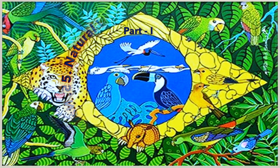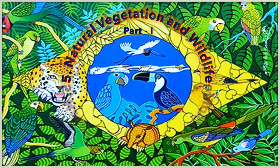Welcome back students to the fifth chapter of 10th standard geography: Natural Vegetation and Wildlife. In this lesson we'll cover the natural vegetation and wildlife of both India and Brazil and also compare them. So far we've studied the location, extent, physiography, and climatic conditions of both these countries. Now in this chapter we will see how these factors affect the natural vegetation and wildlife. This presentation will cover the natural vegetation of Brazil.